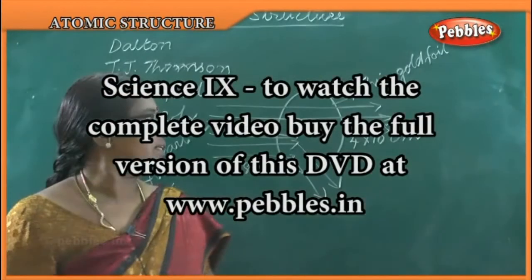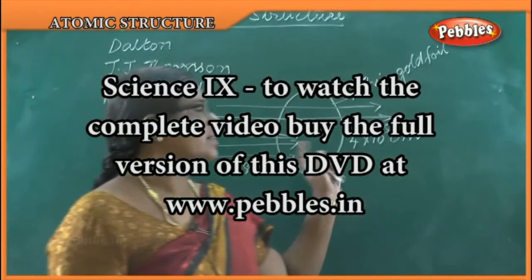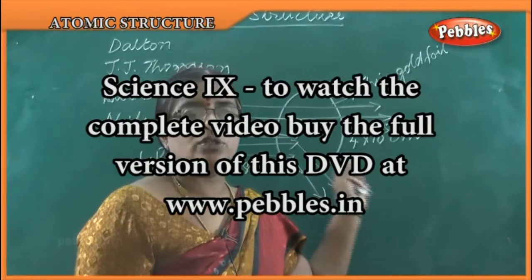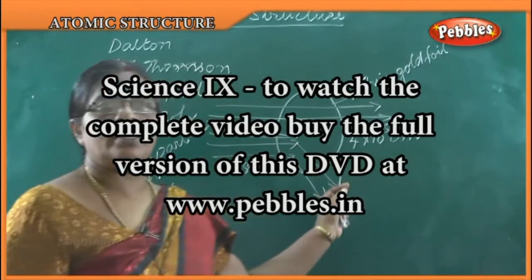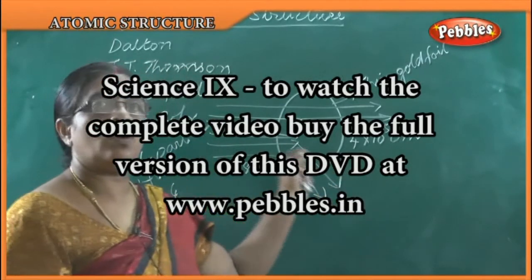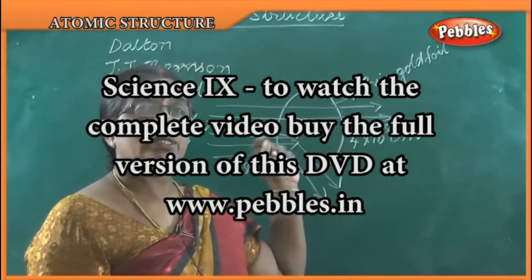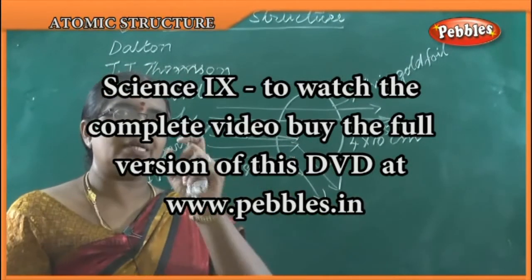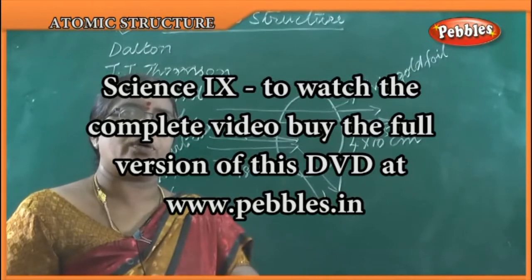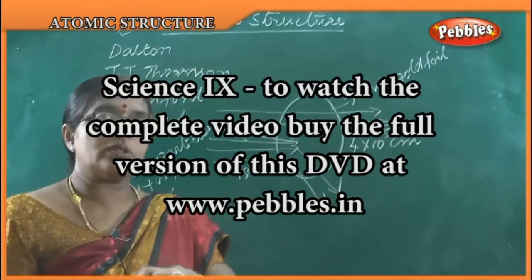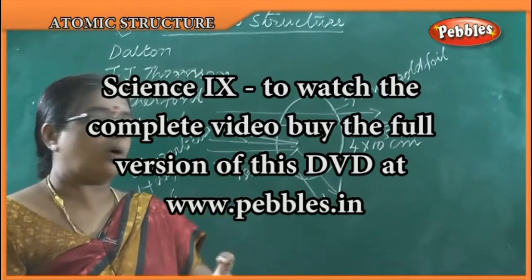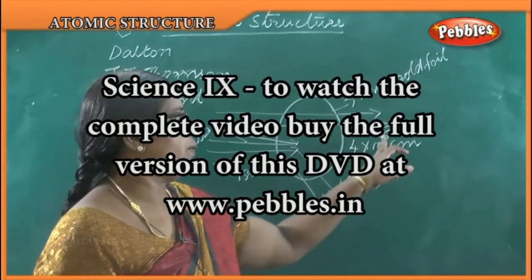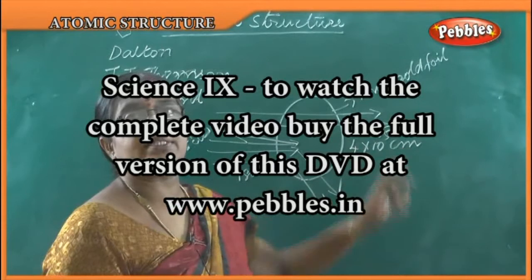Regarding the gold foil used in the experiment: Rutherford used a gold foil with a thickness of 4 × 10⁻⁵ centimeters, which is an extremely thin gold foil.